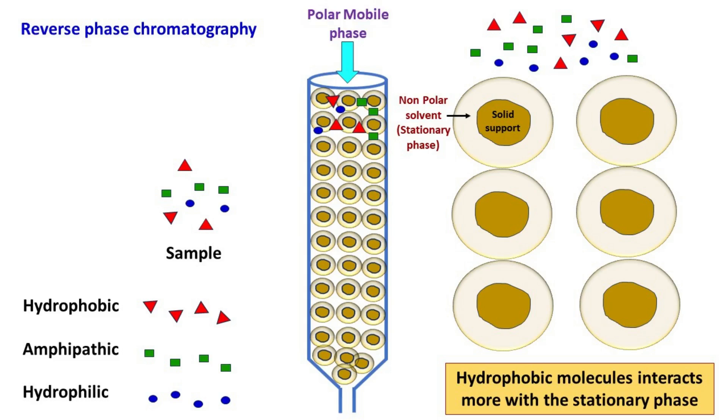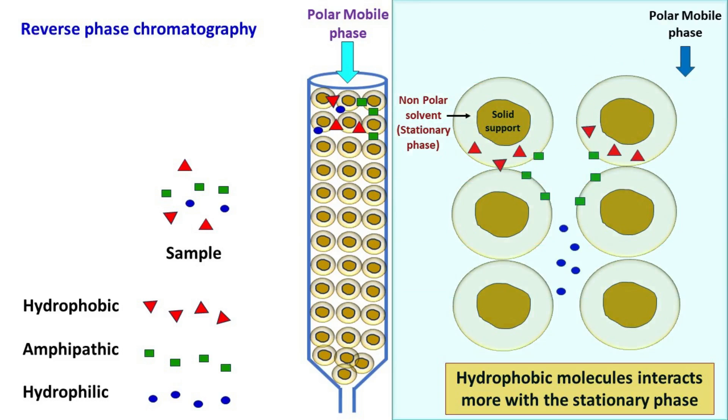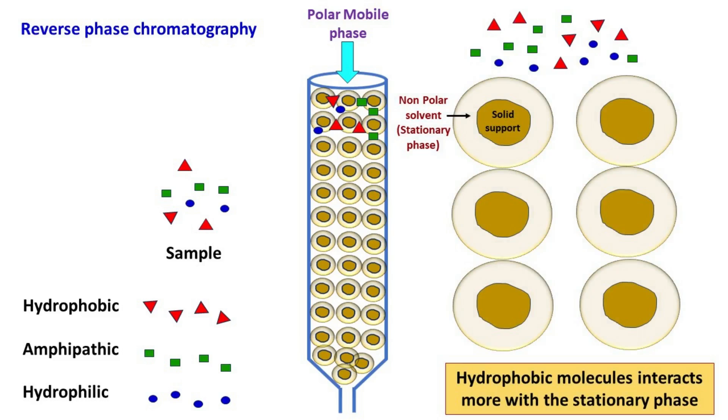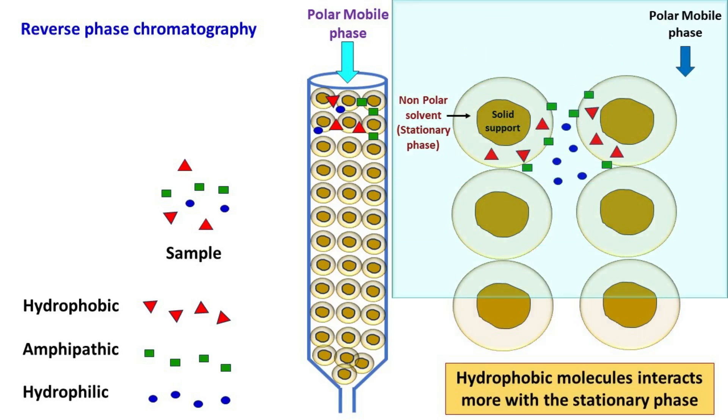Now when the polar mobile phase is passed through the column, the separation of molecules occurs based on the interaction between mobile phase and the stationary phase. The molecules which are more hydrophobic tend to remain in the stationary phase. As a result, they move slowly, while the hydrophilic molecules move fast down the column.